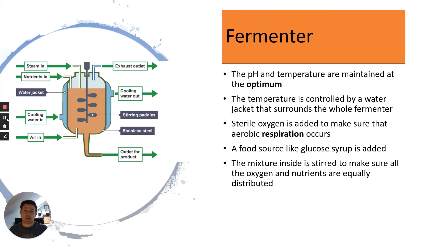In your exam they might want you to talk about how mycoprotein is actually made. As you can see in the picture here, this is called a fermenter. The Fusarium is added with a food source, usually glucose syrup, and conditions inside the fermenter are controlled. For example, pH and temperature are maintained at an optimum to prevent enzymes from being denatured.